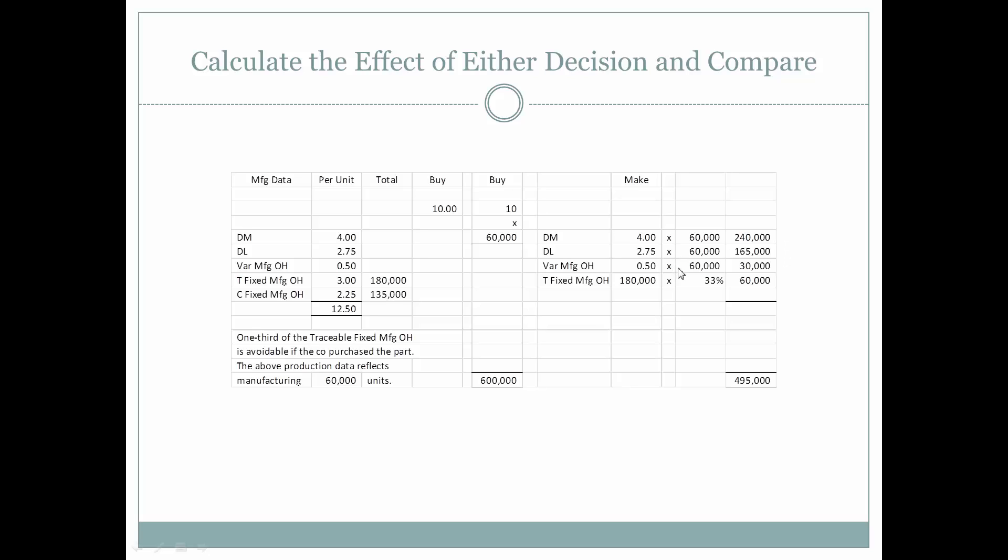We're going to multiply each one of those by 60,000, and then we're going to associate with making the part the one-third avoidable or relevant costs of the traceable fixed manufacturing overhead. This is a portion of those traceable fixed manufacturing overhead costs that are truly associated with making this product, making this component.